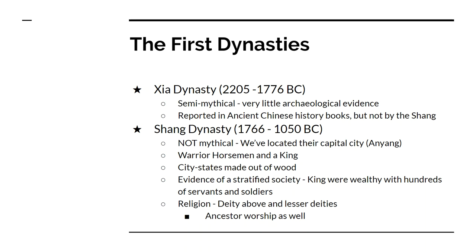The first dynasty that we know for sure is the Shang dynasty — we know they're not mythical. Their capital city was actually discovered in the 1920s; that's the city of Anyang. Their history was also written on tortoise shells known as oracle bones, and they've inscribed or carved their history into these tortoise shells. They're ruled by warrior horsemen; they have a king. They're set up in city-states, and their cities were made out of wood, most likely because they had to move often because of floods or war.